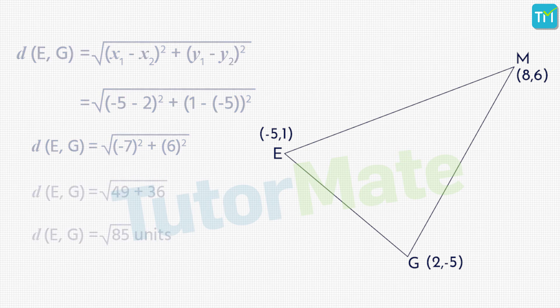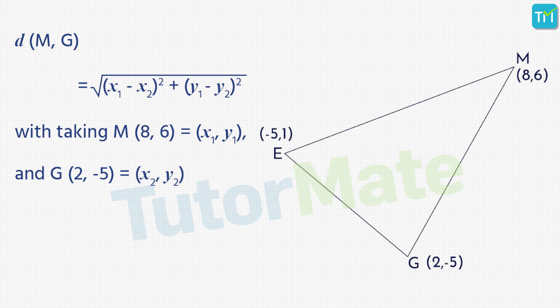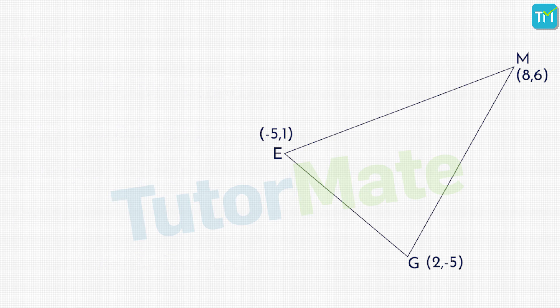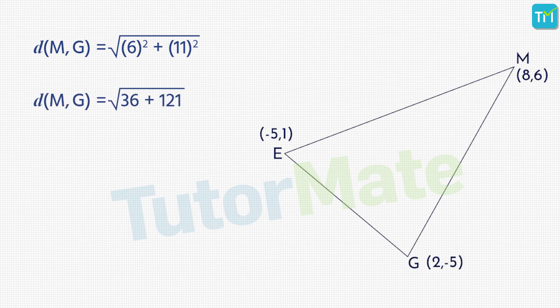Finally, we will find the distance MG by denoting M, that is (8, 6), as (x₁, y₁) and G, that is (2, -5), as (x₂, y₂). Then by using the distance formula, we get distance MG is equal to √[(8 - 2)² + (6 - (-5))²]. Simplifying this, we get distance MG is equal to √(6² + 11²). Now 6² is equal to 36 and 11² is equal to 121. So we get distance MG as √(36 + 121), that is √157 units.